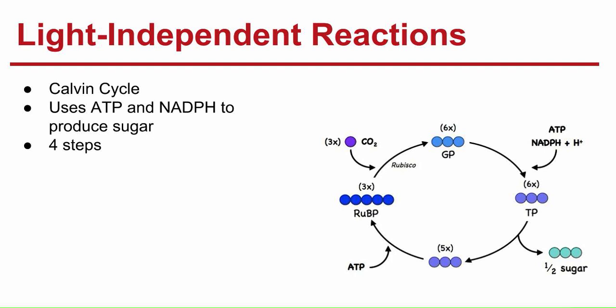The first step is that six CO2 molecules enter the cycle from the atmosphere. They combine with six 5-carbon molecules to produce 12 3-carbon molecules. That's a little confusing.